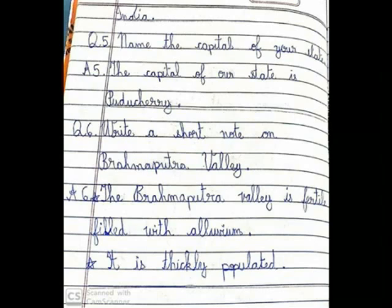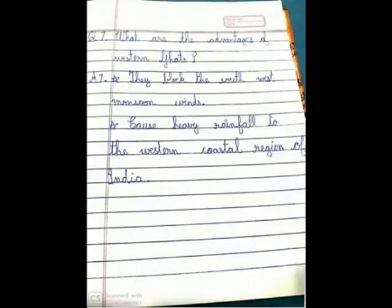Question 6. The Brahmaputra Valley is fertile, filled with alluvium. It is densely populated.